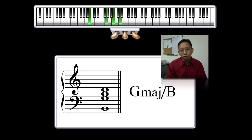Now, it depends on what you want to do in the right hand there. You could do it in root position, you could do it in first inversion, you could do it in second inversion, but notice as long as it has the B on the bottom, that's what the G slash B stands for.